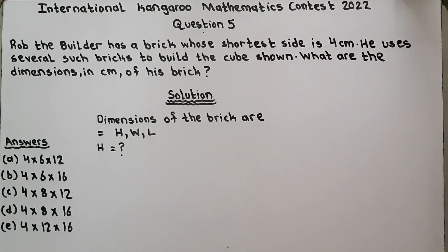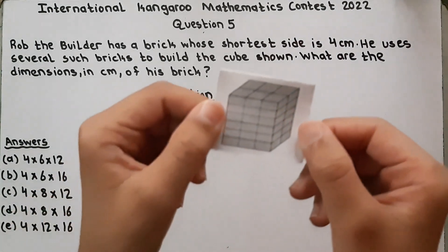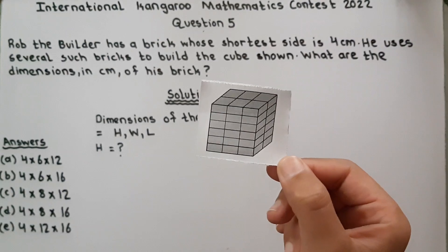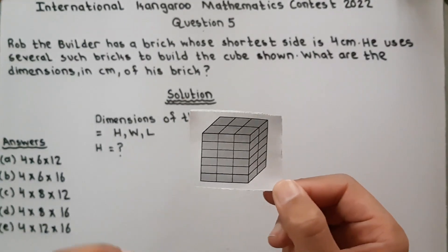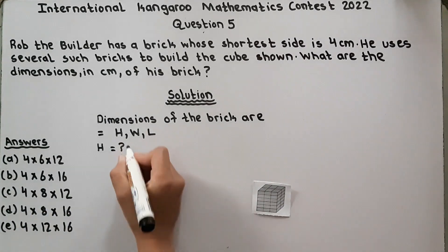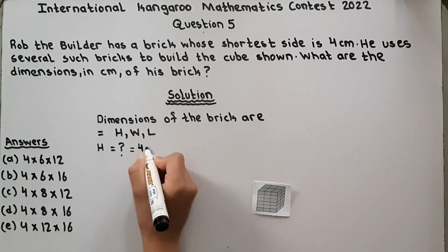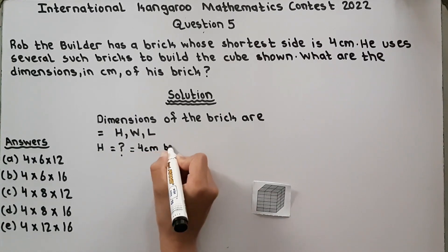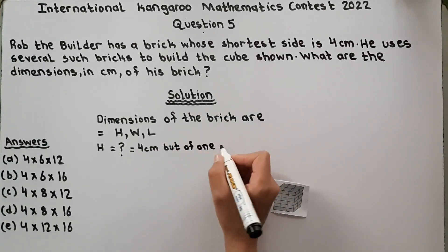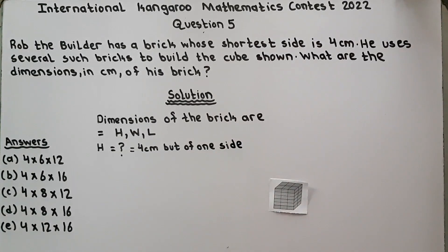From the figure we can conclude the side of the cube is 4 cm. Look, this one 4 cm is the shorter side. We have to find the height of all cubes. So this is the height of the cube which is equal to 4 cm but of one side. He has given the height of one side of the cube. We have to find the height of all the cubes.